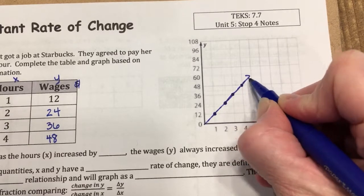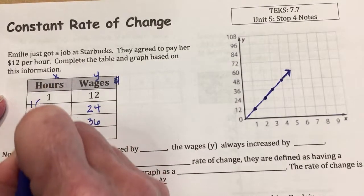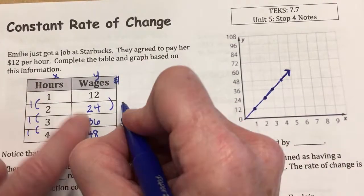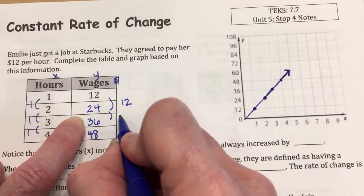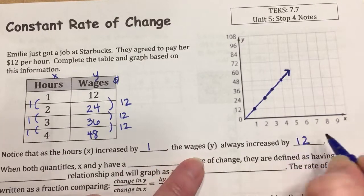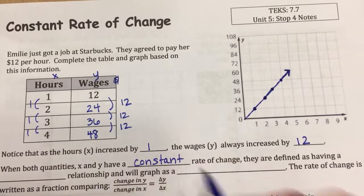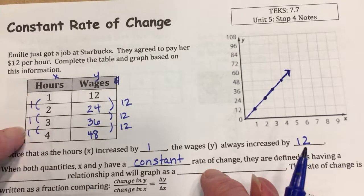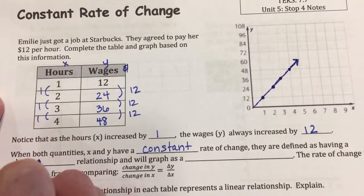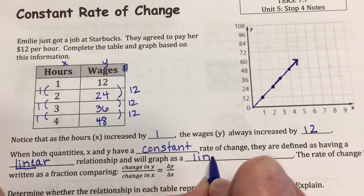That's not a mistake — that should be happening. Notice as the hours increase, they always went up by one. Every time X increased by one, the wages always went up by 12, because 12 + 12 = 24, add another 12 to get 36, and another 12 gives 48. When both quantities X and Y have a constant rate of change, they are defined as having a linear relationship. You can see the word 'line' inside 'linear,' and linear relationships graph as a line.